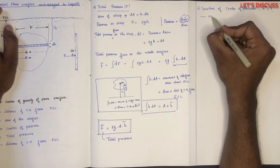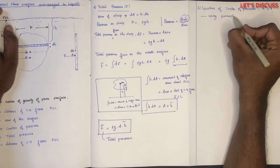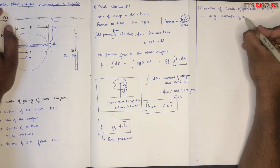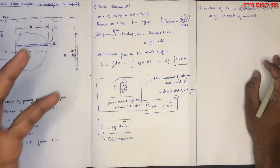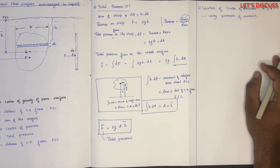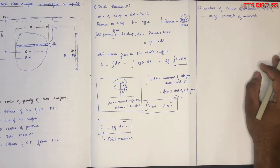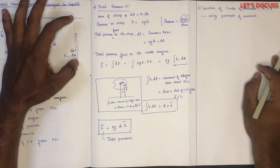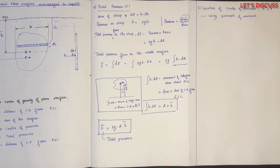Using the principle of moments: a moment is a force multiplied by the perpendicular distance. For a particular force, it acts to a point or distance, and for a moment, a force acts at that distance.